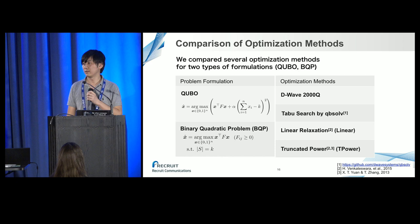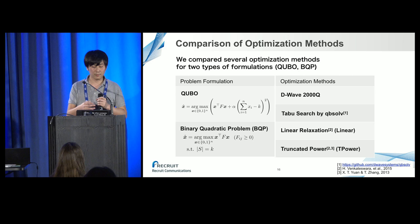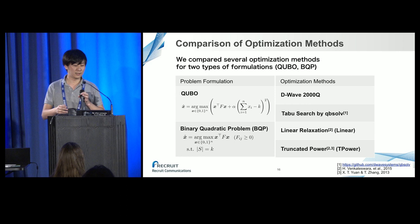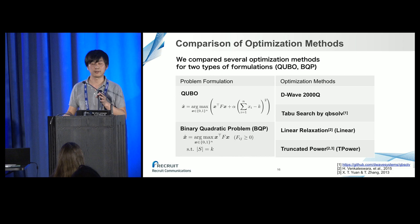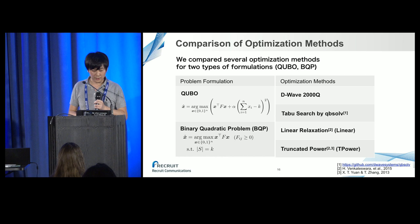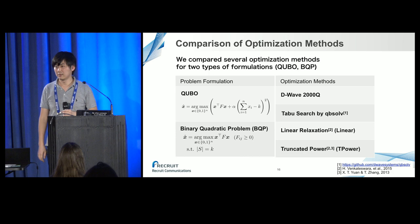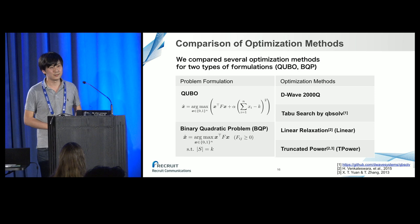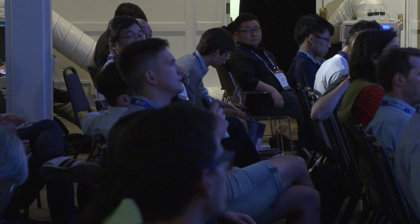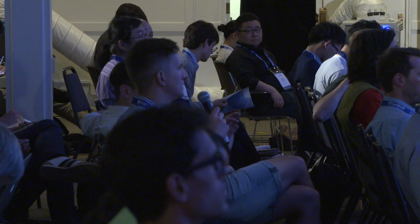Audience: What is the typical value of alpha and how does it scale with the problem size? Speaker: Alpha actually depends on the size of the feature subset K. When K is larger, we have to choose a larger alpha. Also, the tendency of alpha differs between D-Wave and TabuSearch. Audience: Thanks, Tanahashi-san. You showed a final result with a dataset. What was the form of the dataset — was it images or business data?